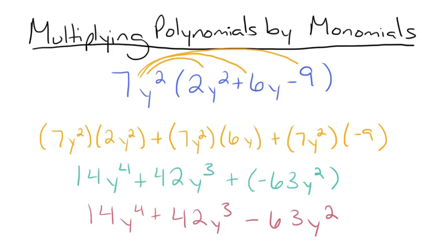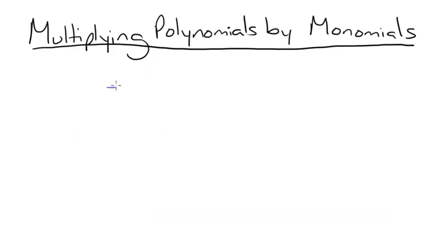Before we go, let's try one last problem. Negative 5x squared y times 3x minus 5xy plus 10y squared. We need to multiply each term of the polynomial by the monomial.